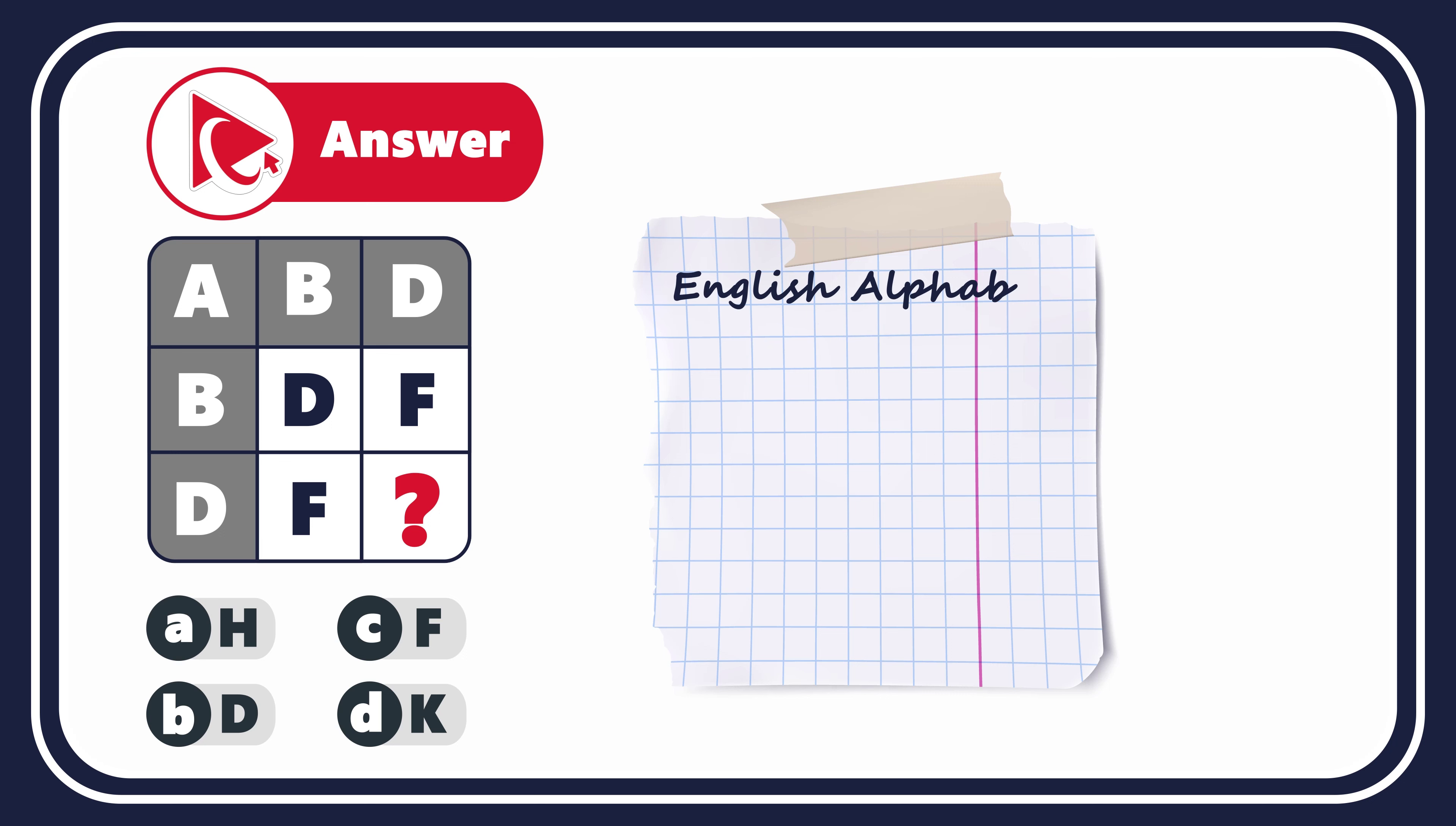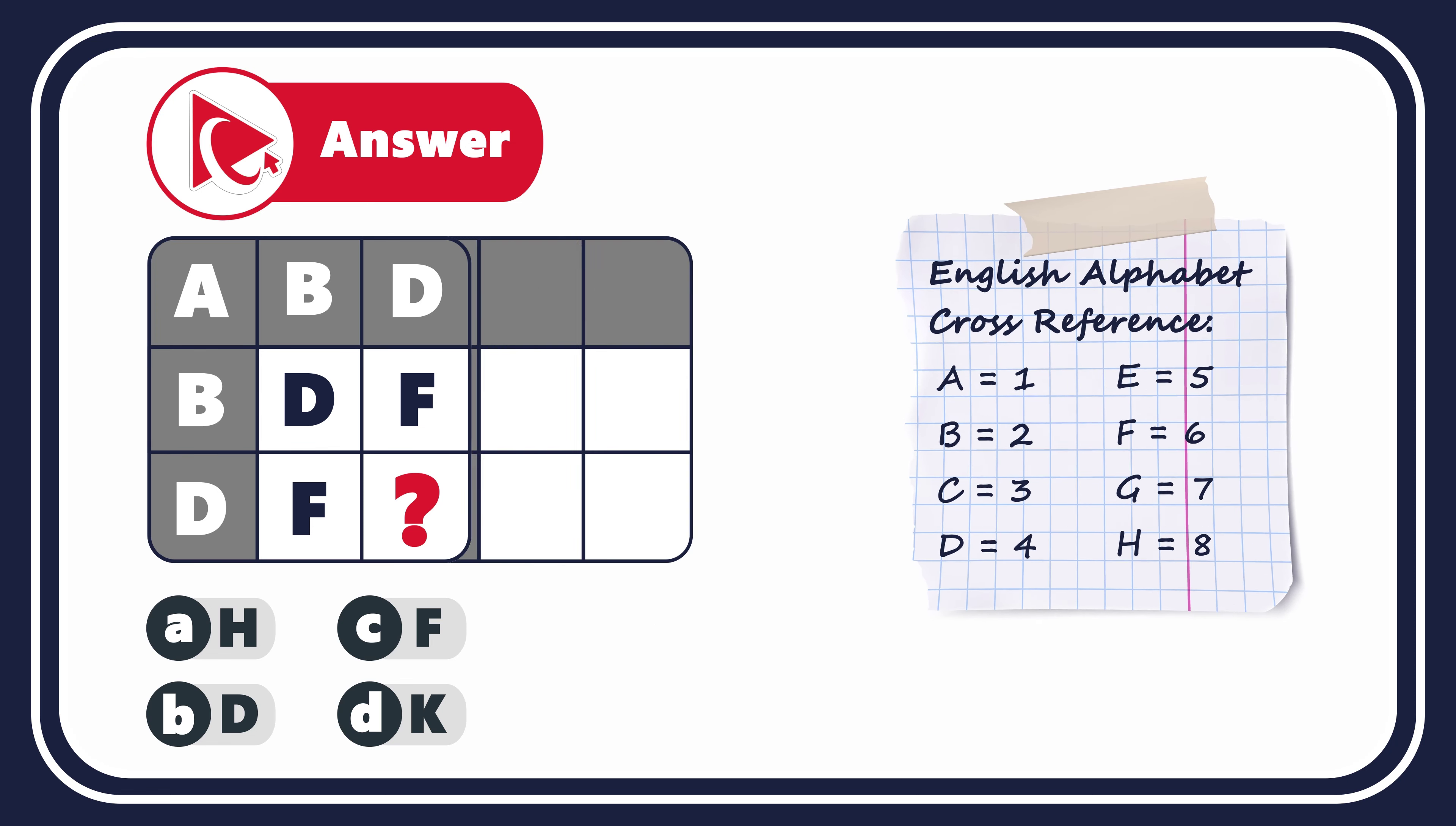To answer this question correctly, let's look at our matrix from a little different dimension. Each letter here corresponds to a specific place in the alphabet which can be represented by the number. For example, letter A equals 1, letter B equals 2, C equals 3, and etc.